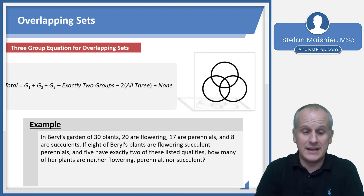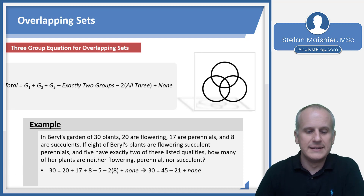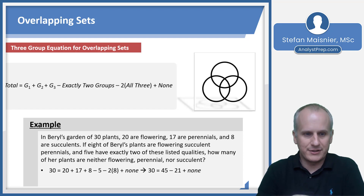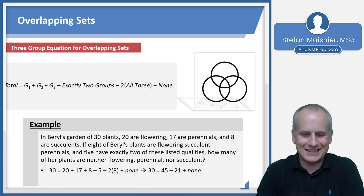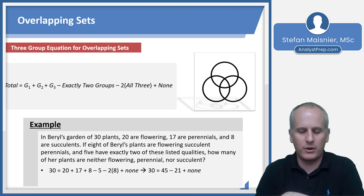We're being asked for the nones — those that are neither flowering, perennial, nor succulent. Setting up our equation: 30 is the total; 20 are flowering (group 1); 17 are perennials (group 2); 8 are succulents (group 3). Then 5 have exactly two of these qualities, so that's minus 5. And 8 are flowering succulent perennials — meaning they have all three qualities — so we do 2 times 8 for all three, plus the nones we're solving for.